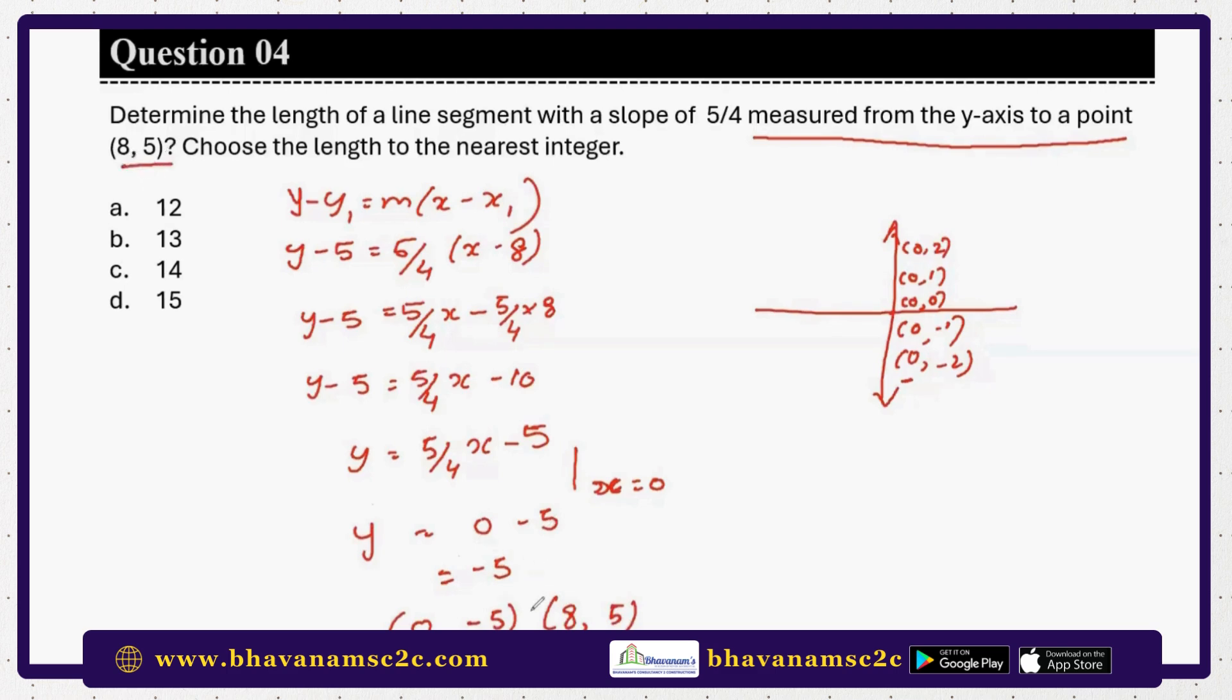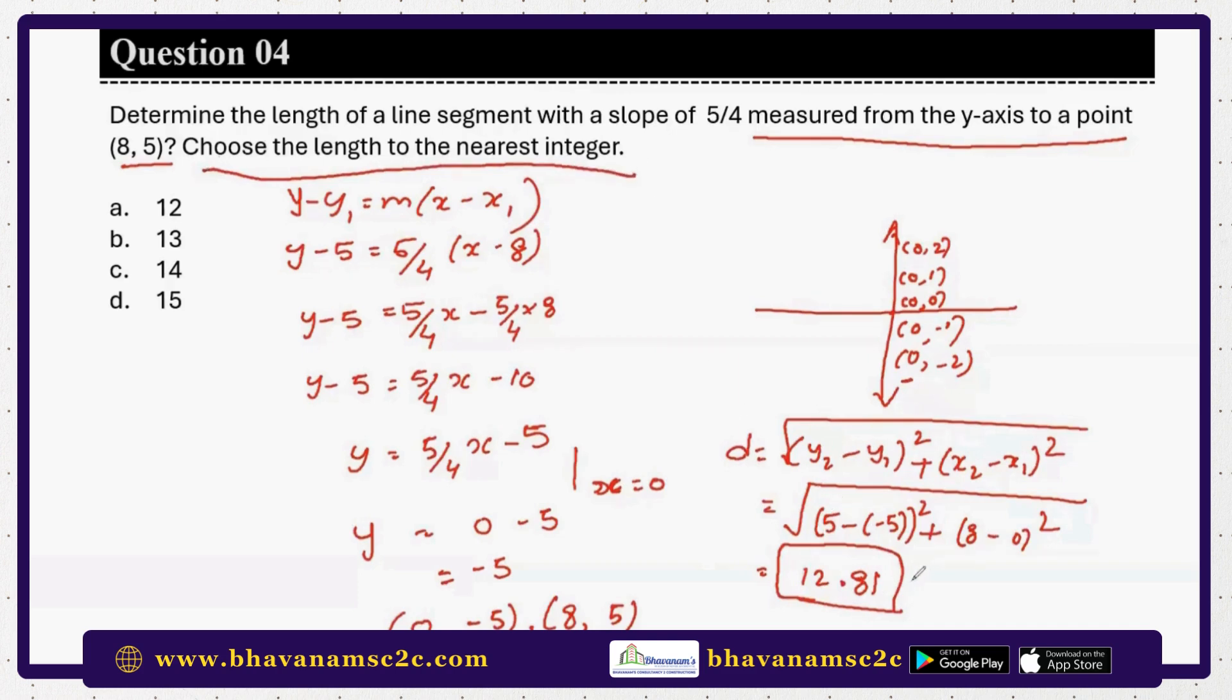Now you know two points. What is that formula? d equal to square root of x2 minus x1 square plus y2 minus y1 square. That is 8 minus 0 squared plus 5 minus minus 5 squared, which is 5 plus 5. 8 minus 0 is 8, so that gives root of 64 plus 100, which is root of 164. That is 12.81. The question says choose the length to the nearest integer. So you have to go for the whole integer, and the answer is 13.